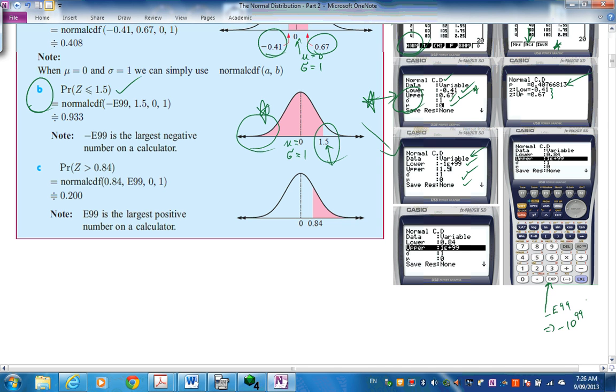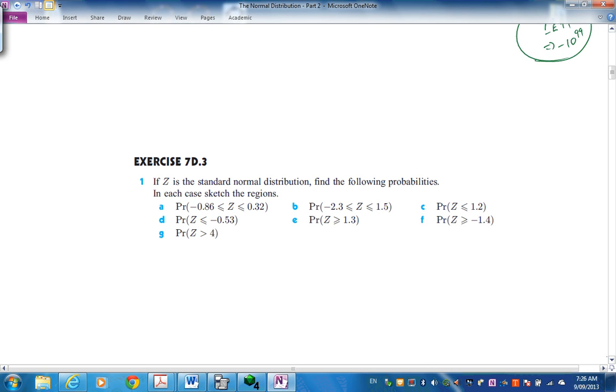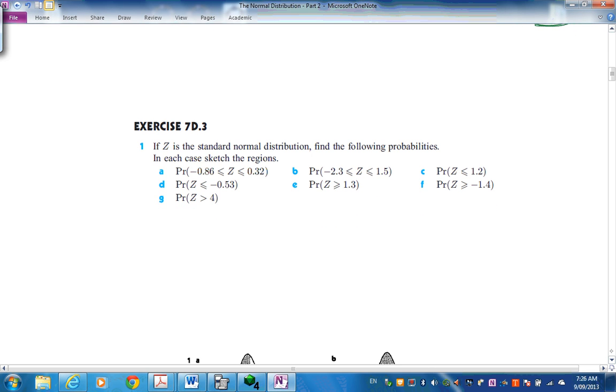Let's do another one now. 0.84 is the lower. And the upper is positive E to the 99, tapering it right off at the top end of the distribution. Sigma 1 mu of 0. You're going to do this on the calculator again. Better do some practice. Sketch what's happening in each of these regions.